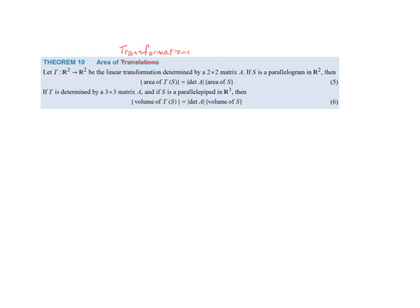Finally, we apply this process of finding area to linear transformations. If I have a transformation from R2 into R2, determined by a 2-by-2 matrix A, and S is some parallelogram in R2, then the area of the transformed parallelogram — the area of T(S) — equals the absolute value of the determinant of A times the area of S. A similar application holds in three dimensions.